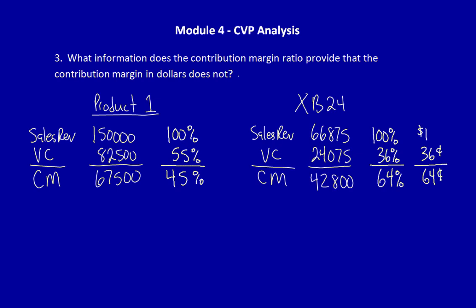For every dollar of sales, we get $0.64 in our pocket to cover fixed costs and operating income to make our external shareholders, such as investors, happy.